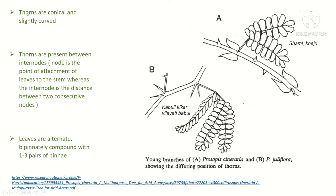To summarize: thorns in shami are conical and slightly curved, present between internodes. You can see the compound leaf arising from a node, and thorns appearing in the internode space between nodes. Foliaceous stipules are also visible at the base of compound leaves. These are the typical identification features of genuine shami.